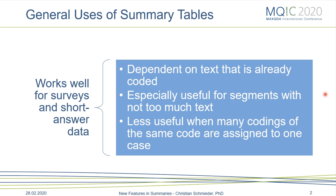So when are you using summary tables? Summary tables work really well for surveys and short answer data, because summary grids are dependent on text that is already coded — you need to have already coded text in order to create summaries of coded segments. Summary tables are especially useful for segments that don't have too much text. If you have a coded segment that is three or four pages long, that will not be as effective because the summary table is really designed for bringing different smaller pieces together and then writing one summary based on it.